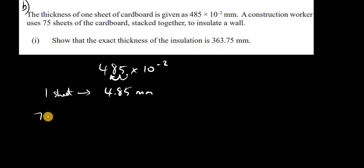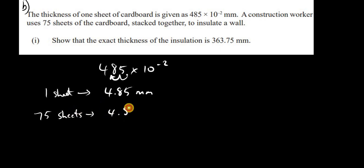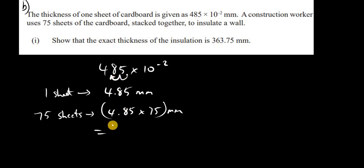If we have 75 sheets stacked together, the thickness is going to be 75 times that amount in millimeters. That gives us the answer: the exact thickness of insulation is 363.75 millimeters. You can use a calculator to check this.